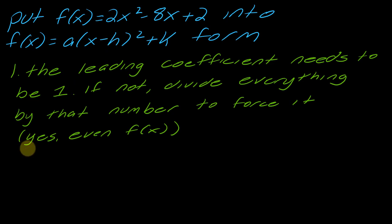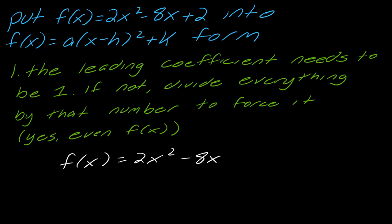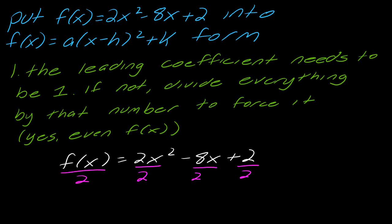This is going to look a little bit odd in some ways, because we're going to do something to f(x). Let me write out the equation one more time just to show you what this step looks like. I want to divide everything by the number — I need a one in front of this x squared. Since I don't have it, I'm going to divide everything by two.